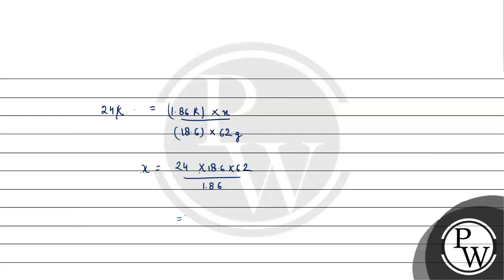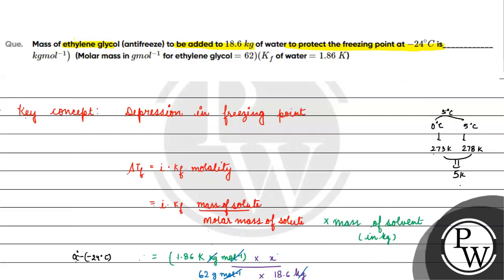Multiplying by 100: 24 into 186 into 62 by 186. This gives us 620 into 24, which equals 14,880 gram or 14.880 kilogram. I hope you understand. Thank you and all the best.